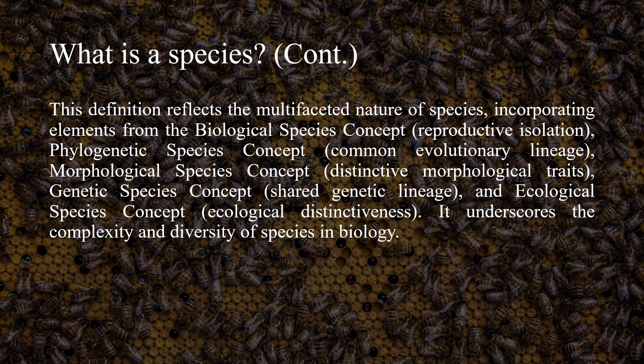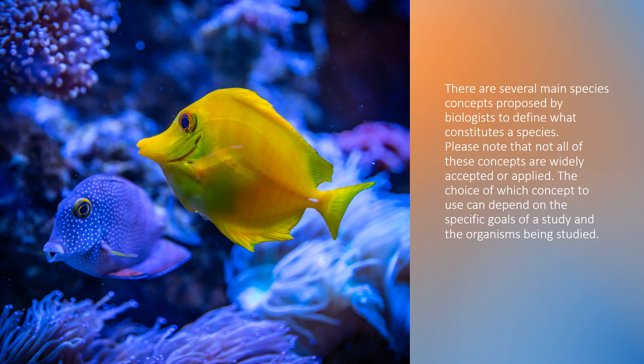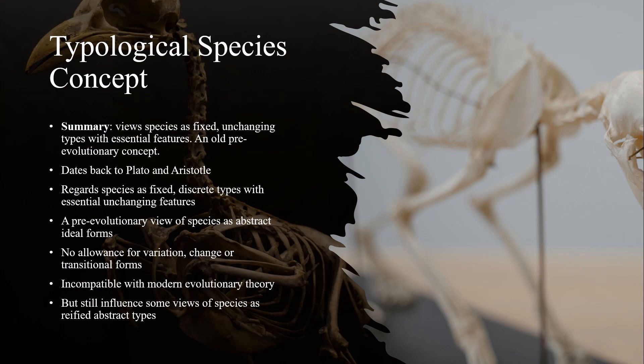It also incorporates the ecological species concept, relying on ecological distinctiveness, underscoring the complexity and diversity of species in biology. There are several main species concepts proposed by biologists and taxonomists to define what constitutes a species. Note that not all of these concepts are widely accepted or applied — the choice depends on the specific goals of a study and the organism being studied. In this video our main focus is on the typological or morphological species concept, which views species as fixed, unchanging types with essential features. This is an old pre-evolutionary concept.